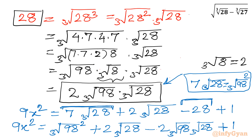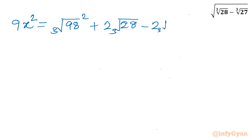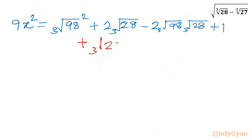Now I will consider one manipulation step. I will add and subtract cube root of 28 whole square. So I write: 9x squared equals cube root of 98 whole square, plus 2 times cube root of 28, minus 2 times cube root of 98 times cube root of 28, plus 1, plus cube root of 28 whole square, minus cube root of 28 whole square.